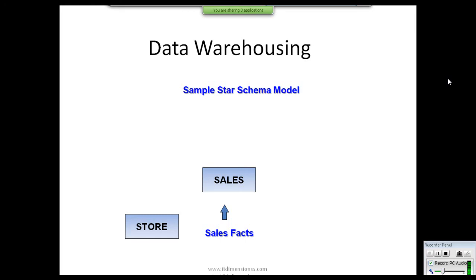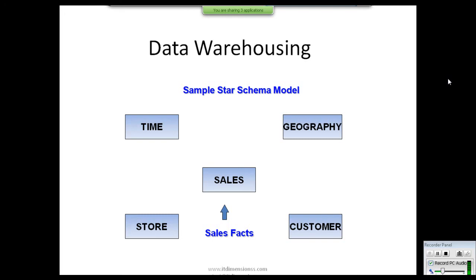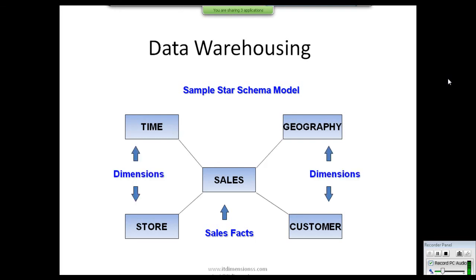This is a sales fact table because it contains sales fact data — mostly numeric data. Dimension data such as store, time, geography, and customer are stored in dimension tables, as these are mostly non-numeric and serve as standards to measure. We have four dimension tables and one fact table connected together, which looks exactly like a star.